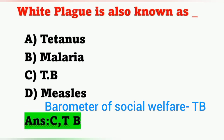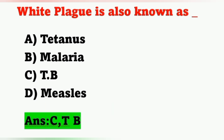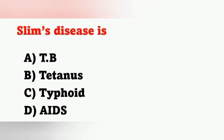TB is also known as white plague or barometer of social welfare. Next question: Slim's disease is? Options: A) Tuberculosis, B) Tetanus, C) Typhoid, D) AIDS. Slim's disease is AIDS — Acquired Immunodeficiency Syndrome. Option D is the correct answer.